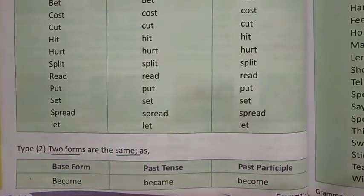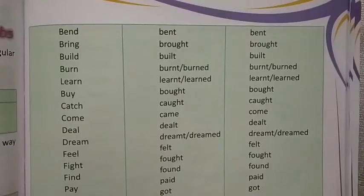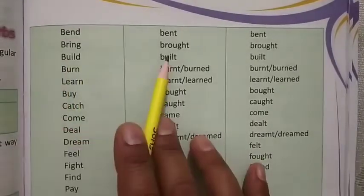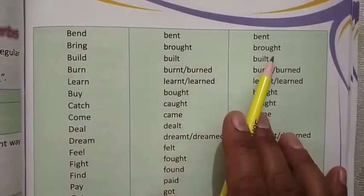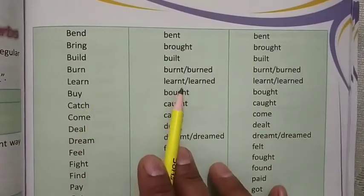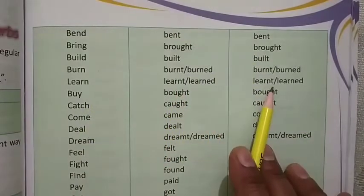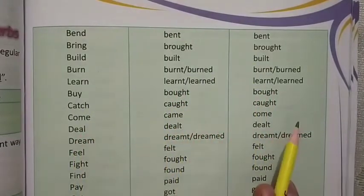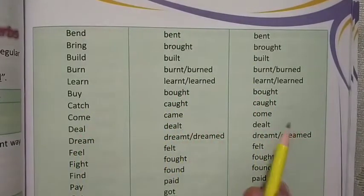Some irregular verbs have two forms that are the same. For example: become, became, become; bring, brought, brought; learn, learned, learned; come, came, come; fight, fought, fought.